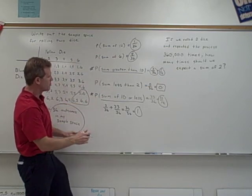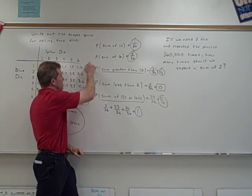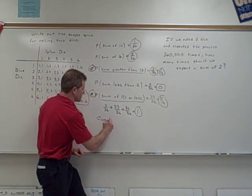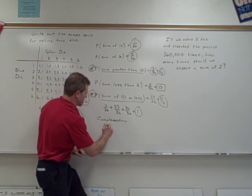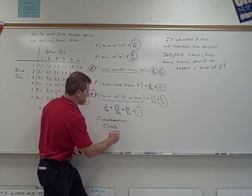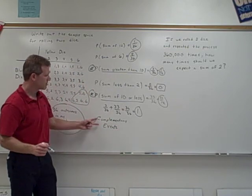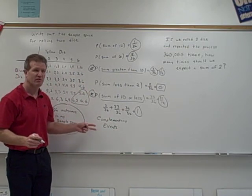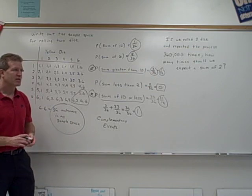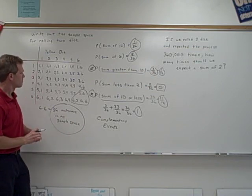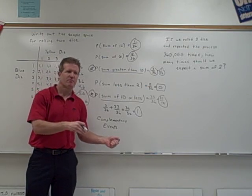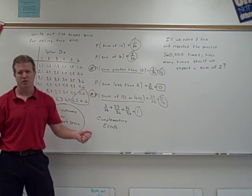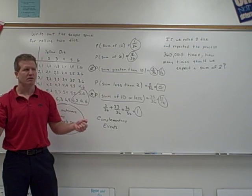When the two probabilities add up to one, like these two do here, those are called complementary events. And the probabilities always add up to one when you're dealing with complementary events. Another example might be the probability of me going to the prom and the probability of me not going to the prom. I'm either going to go or not going to go. Well, the two probabilities would add up to one.